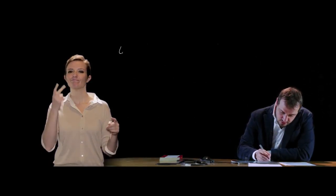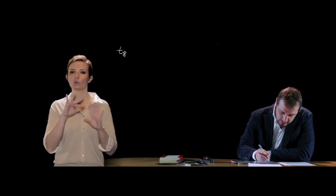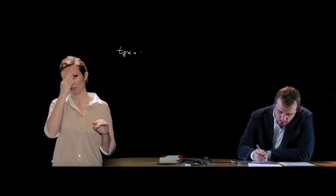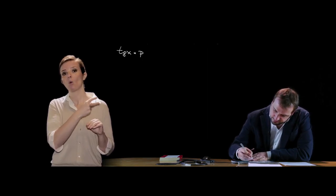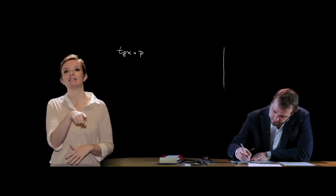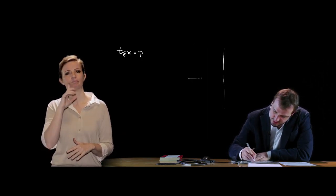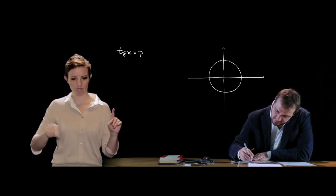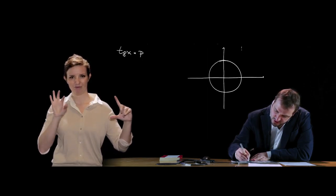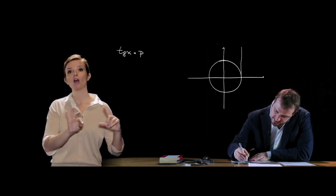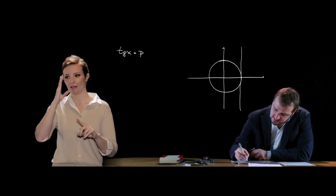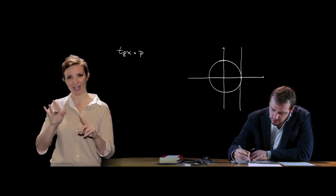Vediamo ancora l'equazione elementare relativa alla tangente, quindi angoli aventi una data tangente: tan x = p. Come al solito ci aiutiamo con la circonferenza goniometrica: la tangente ha bisogno della retta tangente alla circonferenza nel punto di coordinate (1, 0).